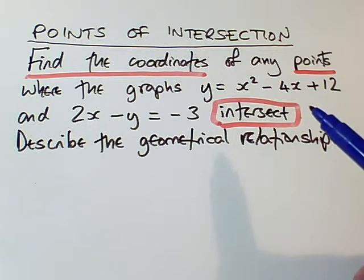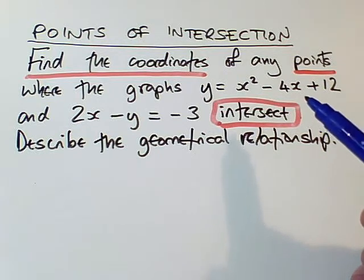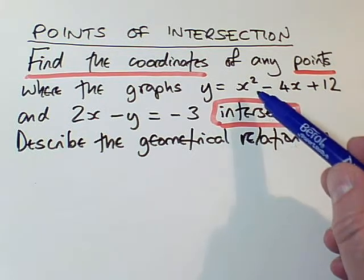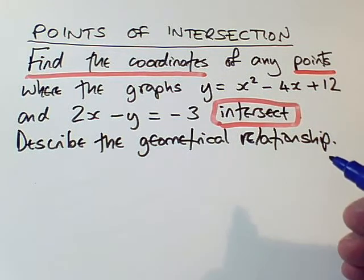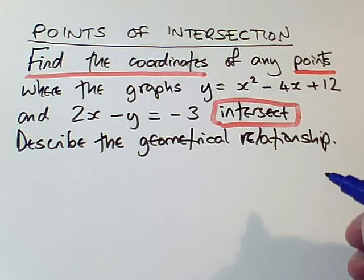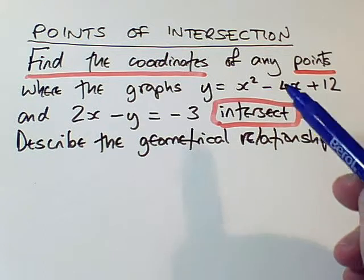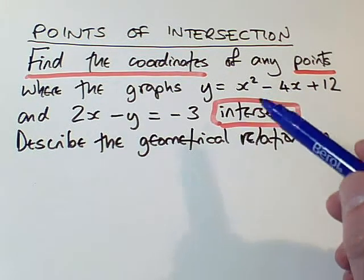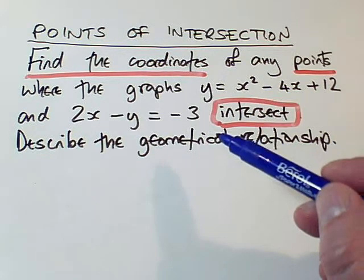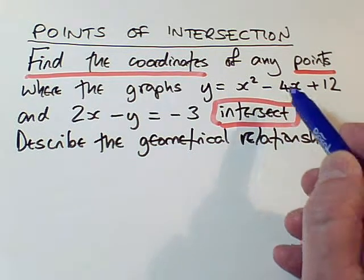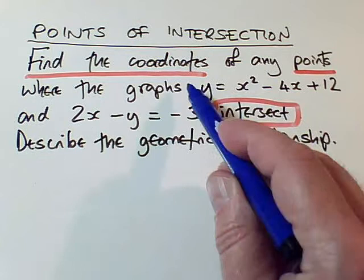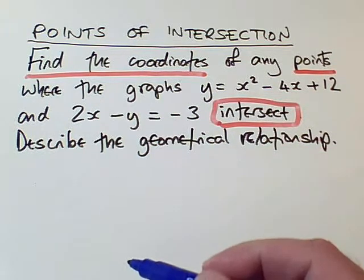But unlike the GCSE kind of simultaneous equations, we've got squared terms lurking around, and we're not going to do this by the GCSE method of elimination. We're going to substitute one formula into the other. Now, y is the subject of this formula, so that means I can easily substitute the one that begins y equals into the other formula.